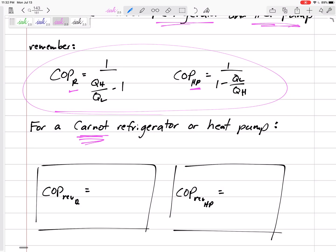Because these are all reversible, we know that the ratio - remember the ratio of QH to QL is equal to the ratio of TH to TL. So now we have another equation, but only use this equation for a reversible refrigerator: it is one over TH over TL minus one. Or if it's a reversible heat pump, the coefficient of performance is one over one minus TL over TH.